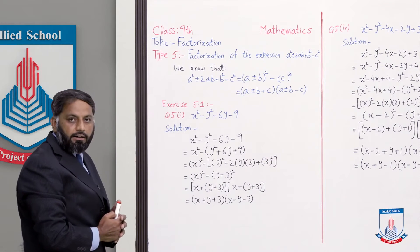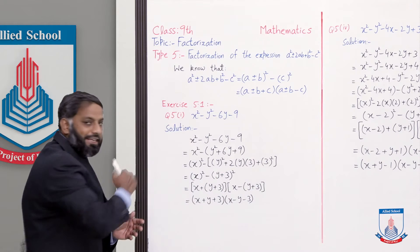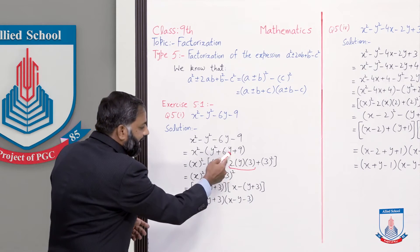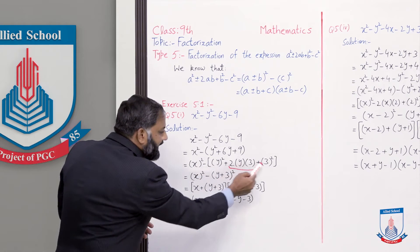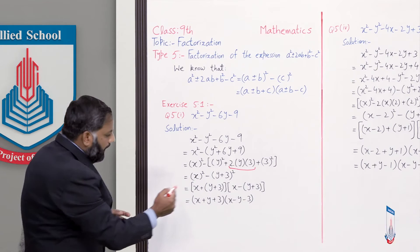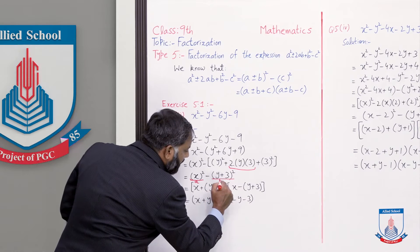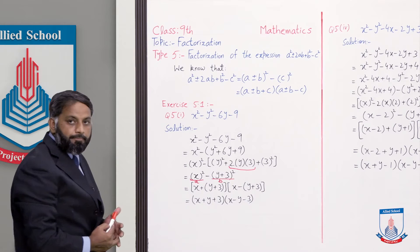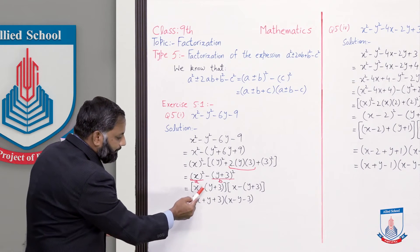y² ko y ka whole square likhenge aur jo last term 9 hai, this is a perfect square of 3, to isko humne 3 ka whole square likha. Aur jo middle term hai woh 2ab banengi — yeh two formula ka likha, a ki value y aur b ki value 3. Ab in teeno factors ko multiply karein to two threes are 6y aa gaya. y² aur 3 ka square 9. Ab yeh jo 3 terms hain yeh milke ban gaya y+3 ka whole square. To a ki value yahan x aa gayi aur b ki value y+3 aa gayi.